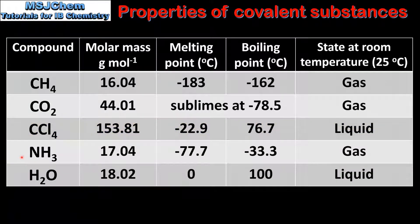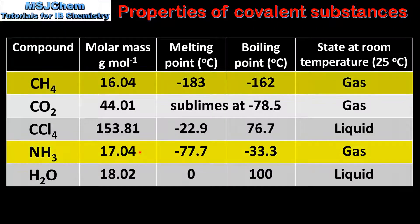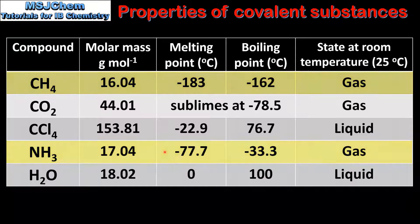The last two examples in the table are ammonia and water. If we compare ammonia and methane we can see that ammonia has a higher melting and boiling point but a similar molar mass. The reason for this is that ammonia has hydrogen bonding between its molecules whereas methane only has weak London dispersion forces.